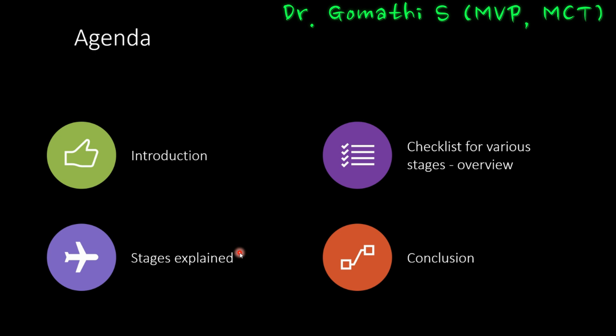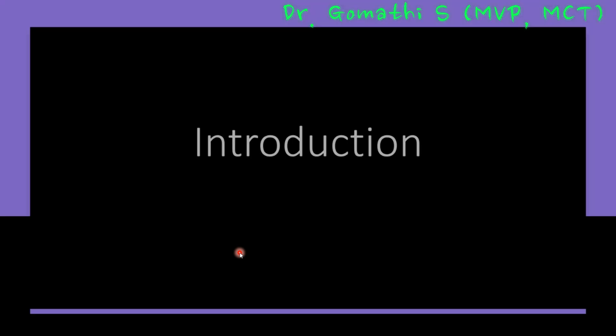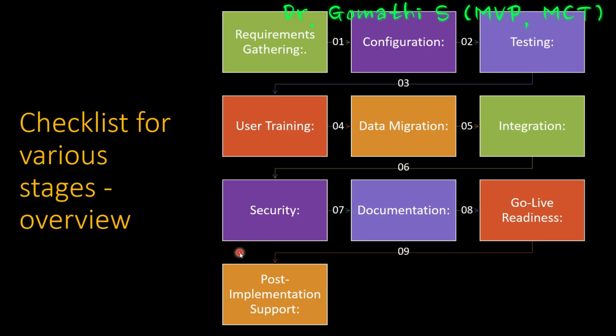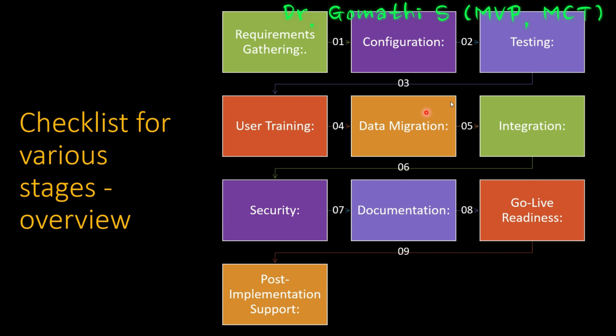I'll be explaining the checklist for various stages that functional consultants will face while working on a project or with clients. The stages are: requirement gathering, configuration, testing, user training, data migration, integration, security, documentation, go-live readiness, and post-implementation support.